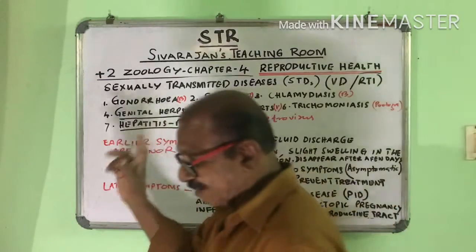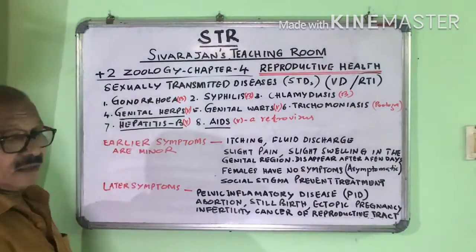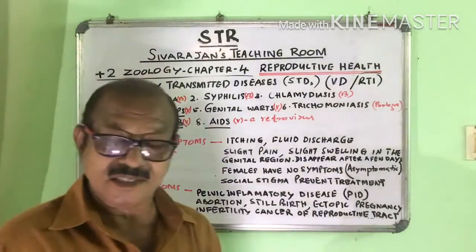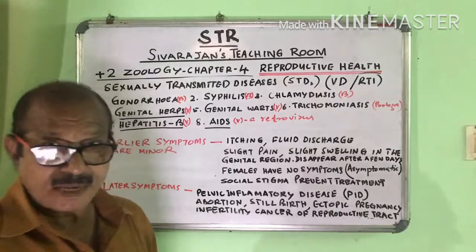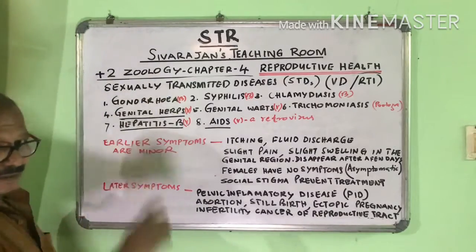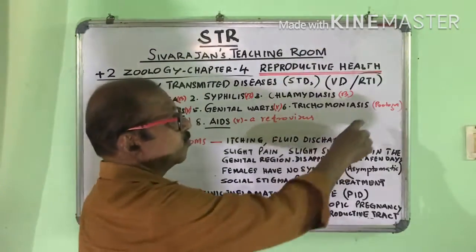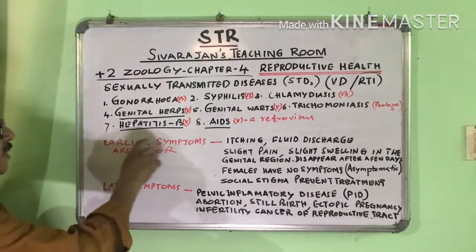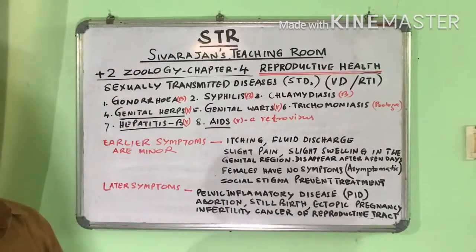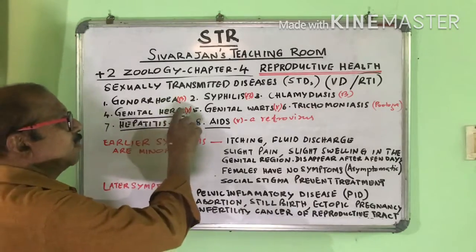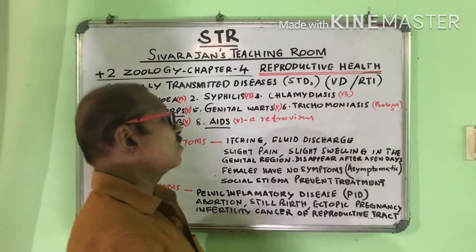I have written a letter in brackets after each disease name in red colour indicating the type of pathogen. Gonorrhea — bacterial disease (B). Syphilis — bacterial. Chlamydiasis — bacterial. Genital Herpes — viral. Genital Warts — viral. Trichomoniasis — protozoan. Hepatitis B — viral. AIDS — viral, caused by a retrovirus.